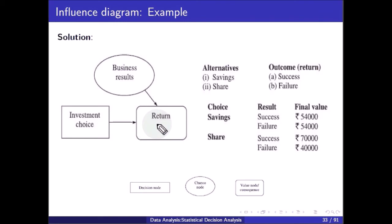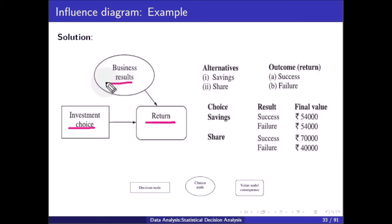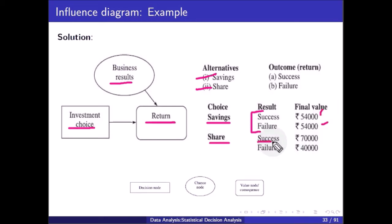Drawing the influence diagram: the return is the outcome or consequence, which depends on investment choice and business results independently. Investment choice does not depend on business results, and business results do not depend on investment choice. Business results depend on chance. For a savings account, you get fixed interest rates whether success or failure. For a share market, success gives a return of 70,000 rupees and failure gives 40,000 rupees. So the return depends upon the business result as well as the investment choice.